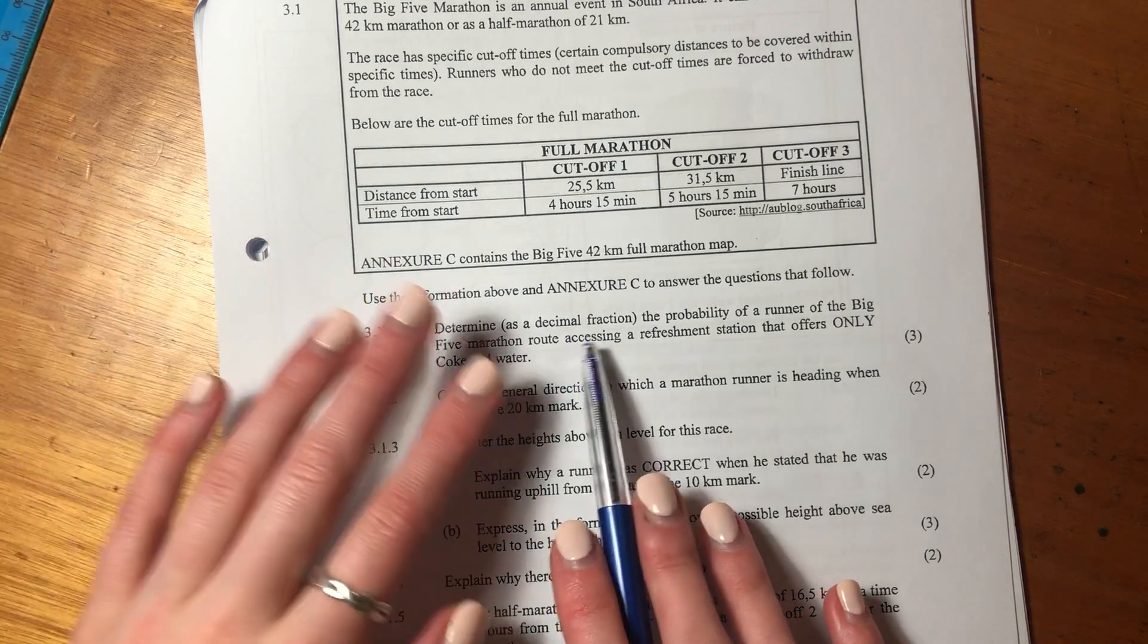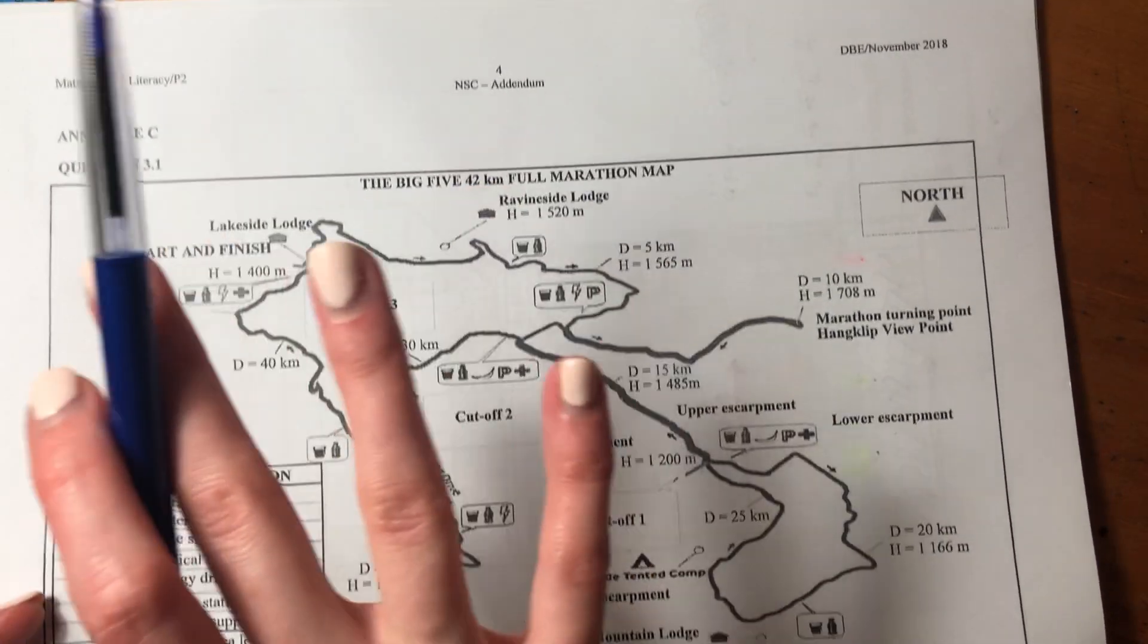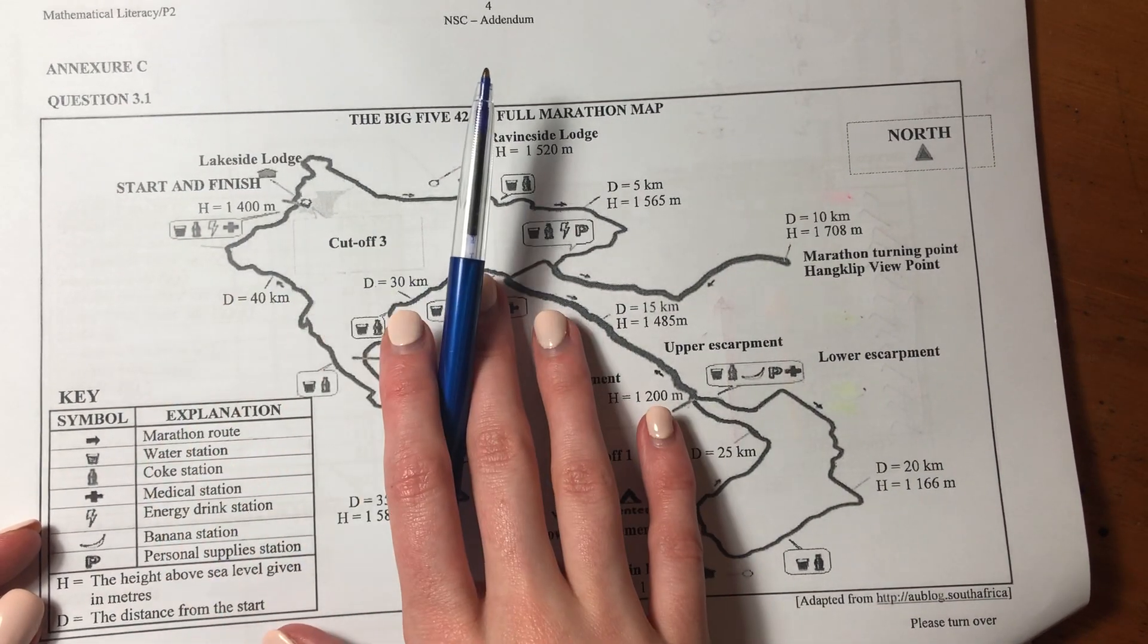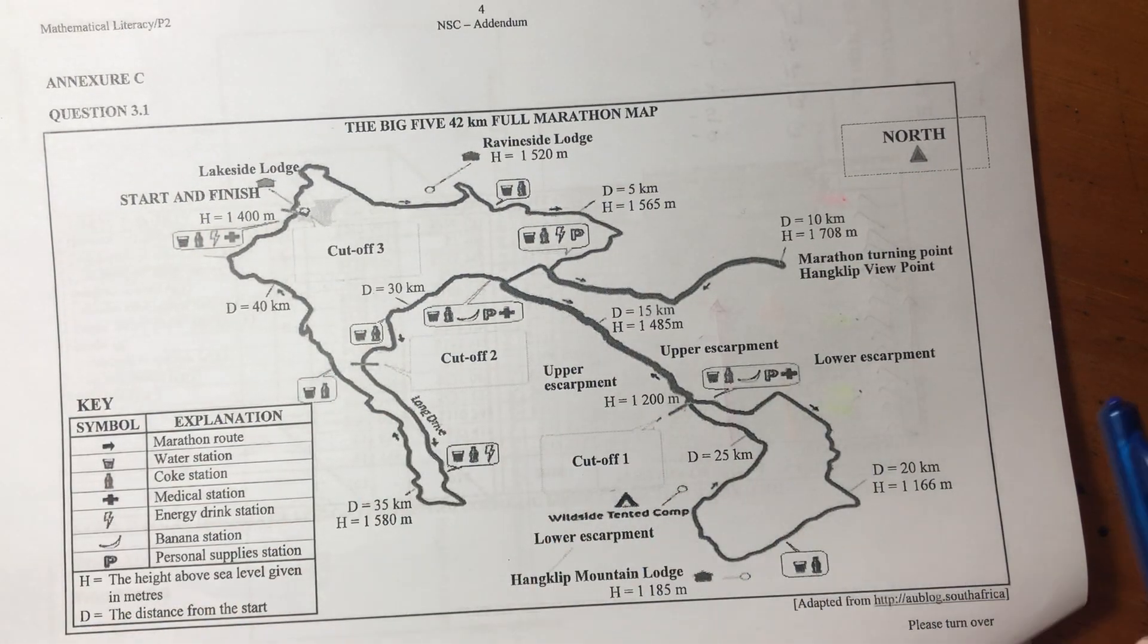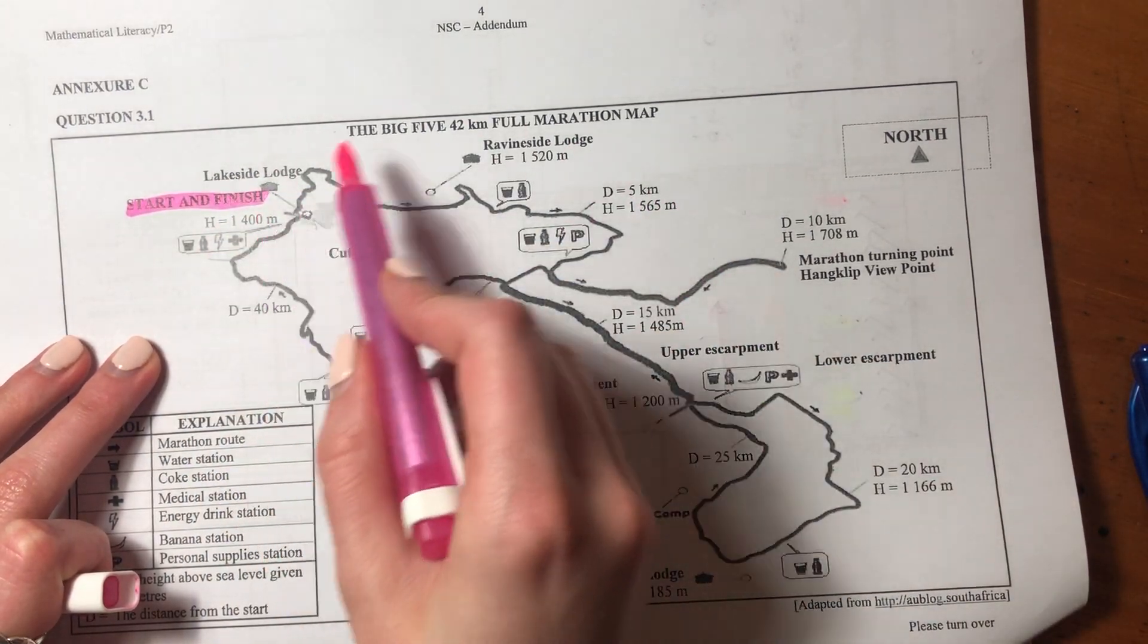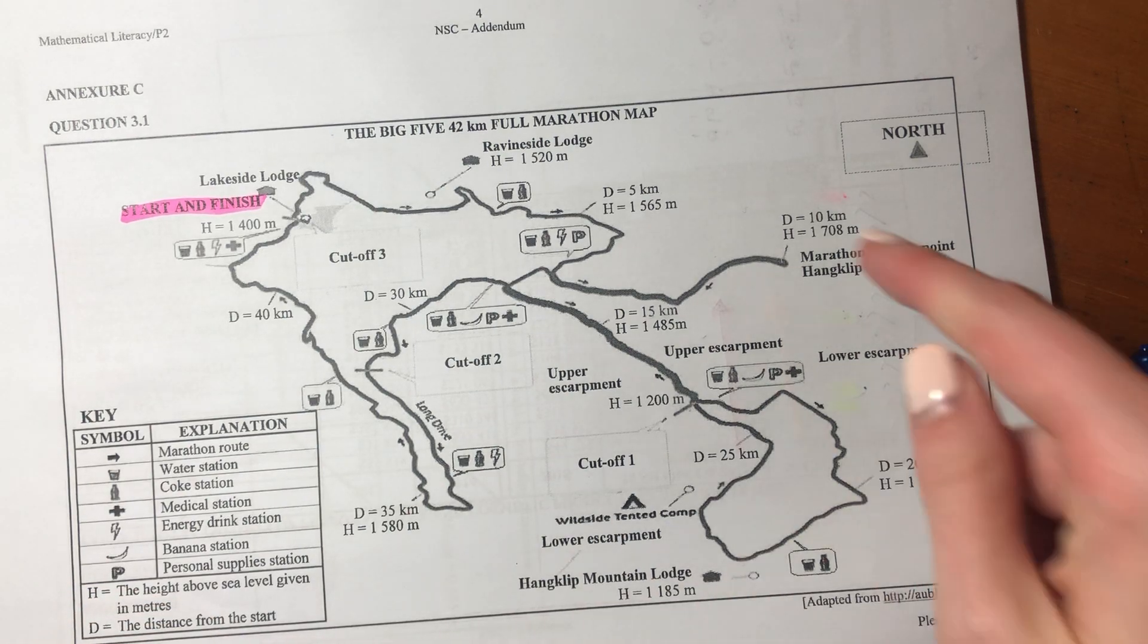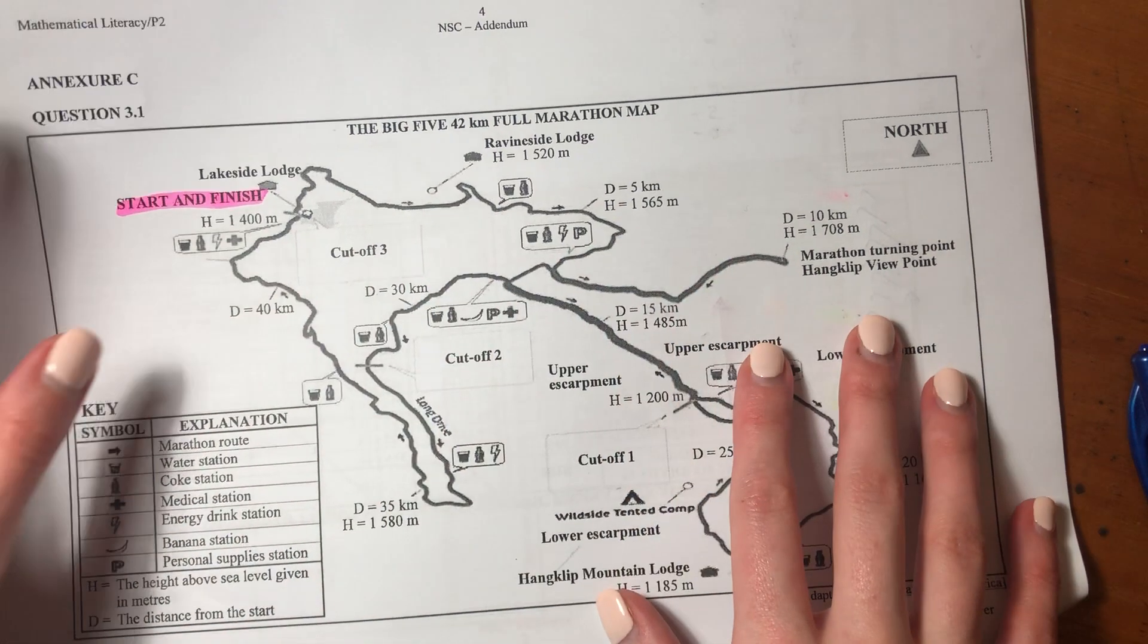It says use the information above and annexure C to answer the questions that follow. So remember, you have these annexures, right? And we're going to use them. So don't forget about that. So here's the map. They start over here. It's always good to have a highlighter. So they start over here, and basically they head the whole way around here and then they finish here. So it's kind of like a weird, I don't want to say a loop because it's kind of all over the place, but they start and finish at the same place.